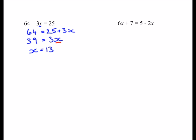Looking at 6x plus 7 equals 5 minus 2x, we're trying to get all our x's on one side. Because this is a minus 2x, I don't like having minus x's, so I'm going to add 2x to both sides: 6x plus 2x is 8x, plus 7 unchanged, and the minus 2x and plus 2x cancel leaving 5. Now to get 8x on its own I subtract 7 from both sides, giving 8x equals minus 2, then divide by 8, giving minus a quarter.